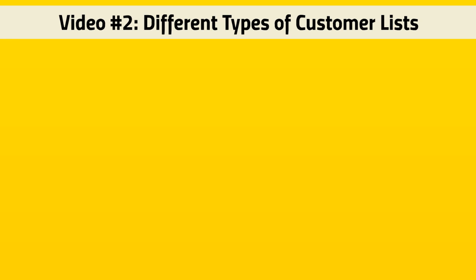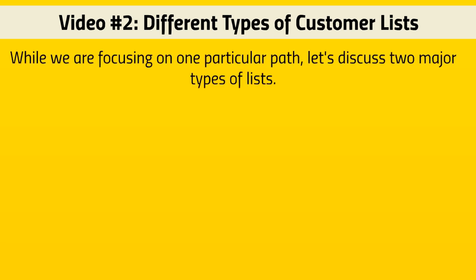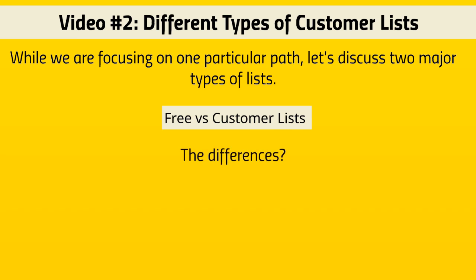Welcome back — this is video number two, and we're going to talk about the two different types of customer lists. While we're focusing on just one particular path, I really want to talk about both major types because I want you to understand why there are two different lists and why we're really focusing on just one. The two major ones are the free list versus the customer list.